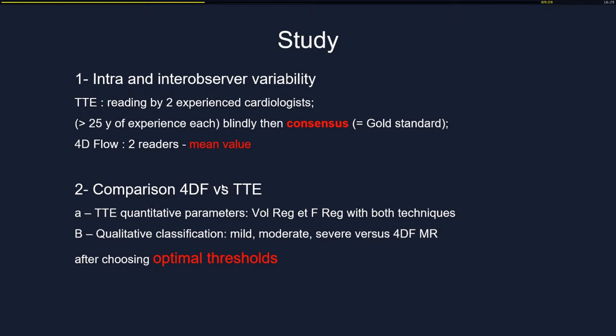For TTE, we used two comparative measures: quantitative parameters — regurgitation volume and fraction — and qualitative classification into mild, moderate, or severe. For 4D flow, we had to define optimal thresholds, because the agreement naturally varies depending on the threshold chosen.